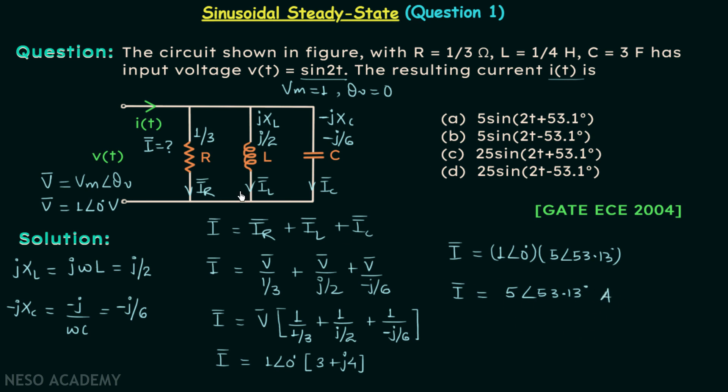And from here it is clear that 5 is IM and this 53.13 degrees is θI. And therefore current I(t) will be 5sin(2t + 53.13°). And hence option A is the correct option.